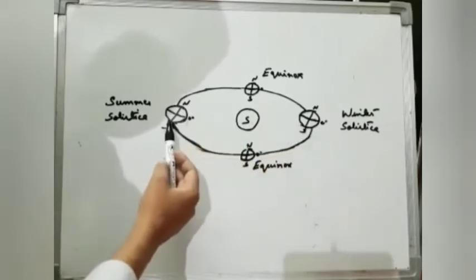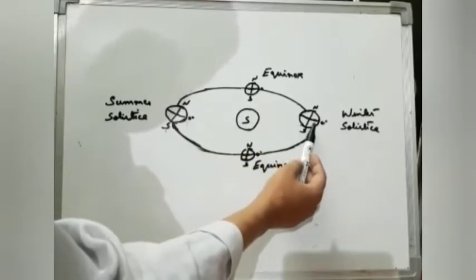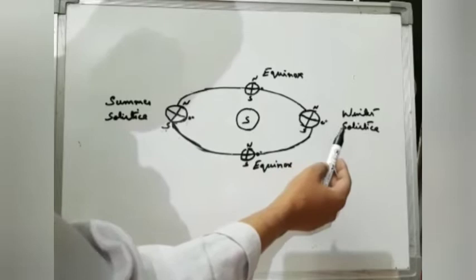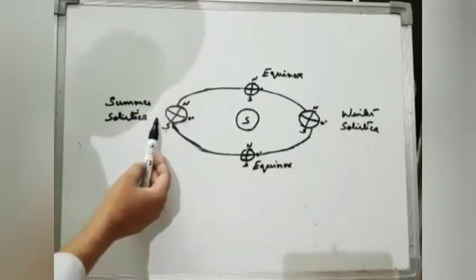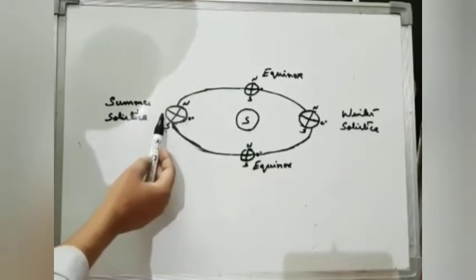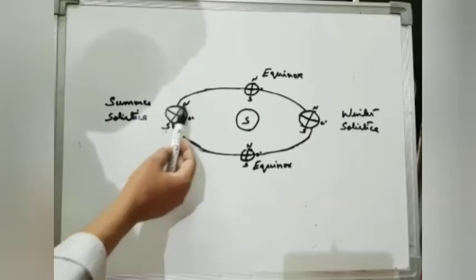This phase is called winter solstice in the month of December 21st or 22nd, and this phase is called the summer solstice in the month of the 21st or 22nd of June.